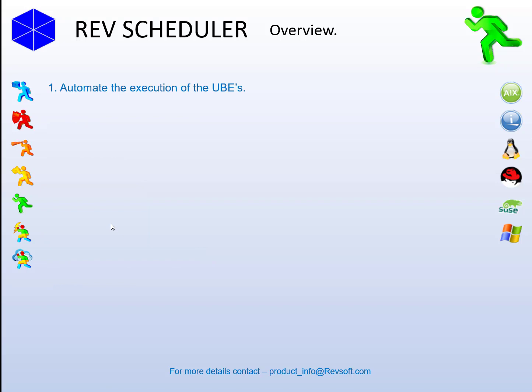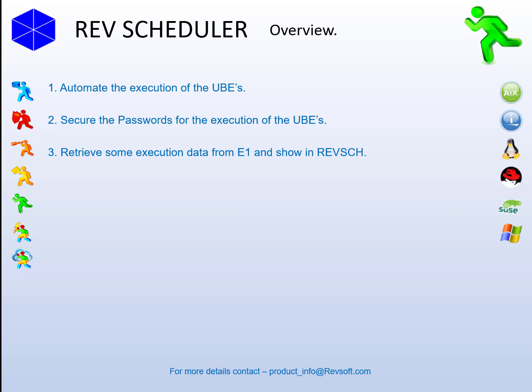When we started the E1 integration, we came up with a list of things that we wanted to be able to do. The first task was to automate the execution of the UBE processes. The next task was to not expose any passwords used to submit the UBEs, as you can see in the run UBE command. The next task was to retrieve some execution data from E1 and display it in RevScheduler — job number, process ID, etc. Then the next task was to only submit the UBE when there's data to be processed, like in the GL post, only when there are approved batches waiting to be processed.